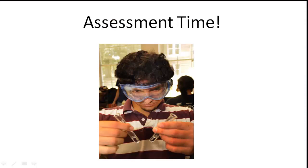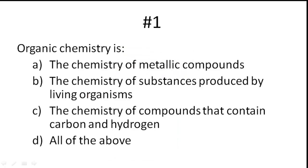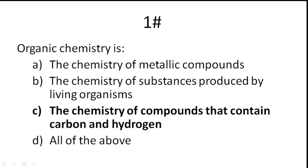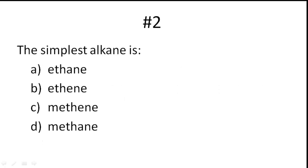Assessment time. Is organic chemistry the chemistry of metallic compounds, the chemistry of substances produced by living organisms, the chemistry of compounds that contain carbon and hydrogen, or all of the above? Go ahead and pick one. Pause if you need more time. It is the chemistry of compounds that contain carbon and hydrogen.